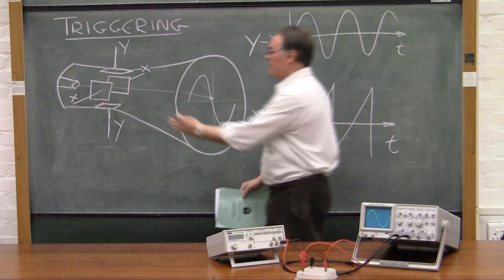And the left and right plates, the X plates, will be charged such that it can move the dot backwards and forwards.